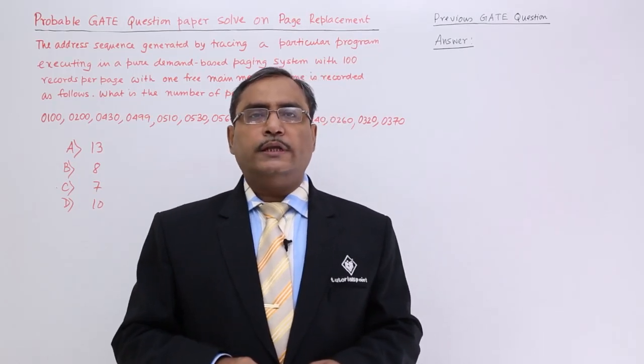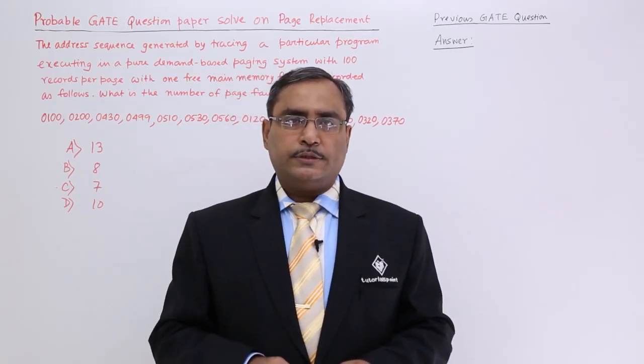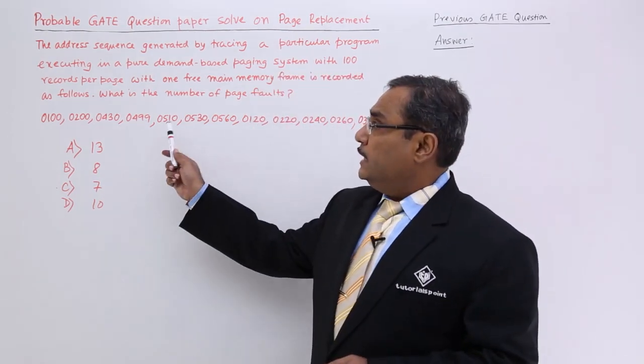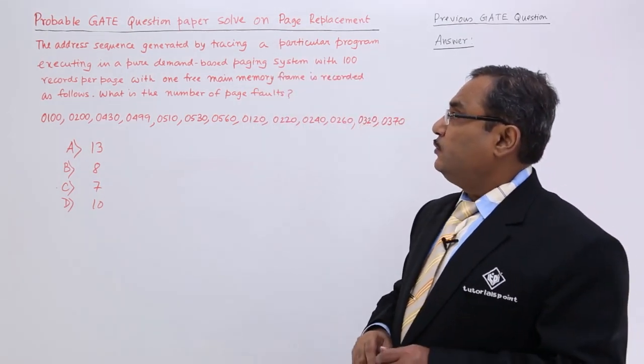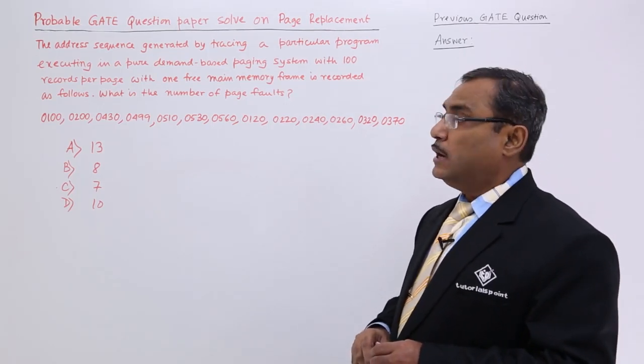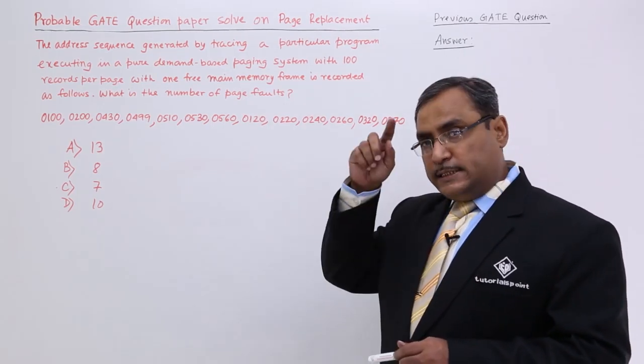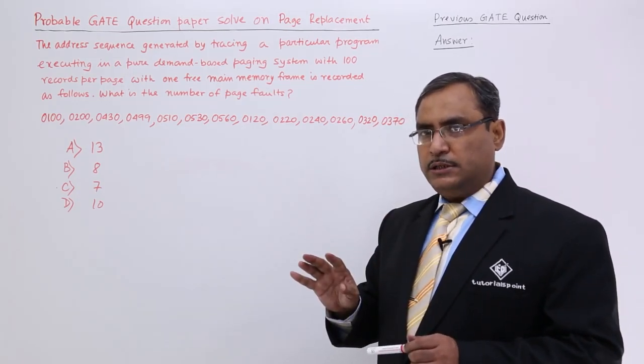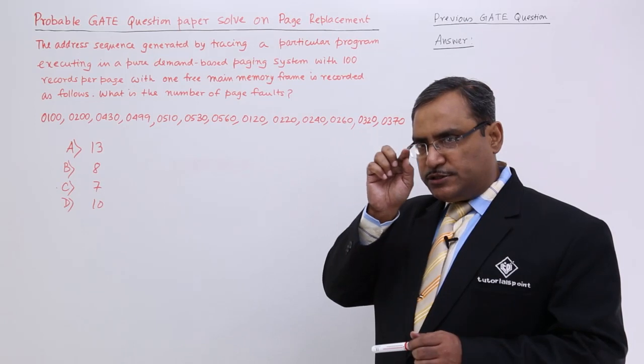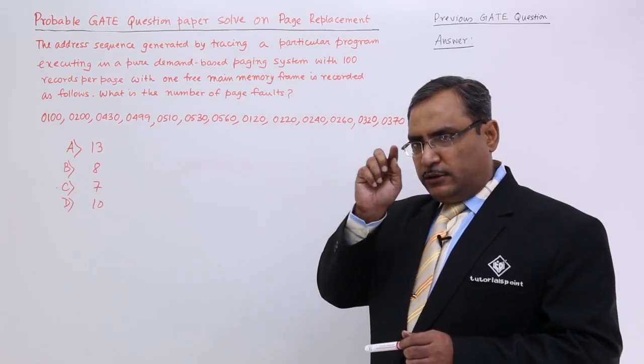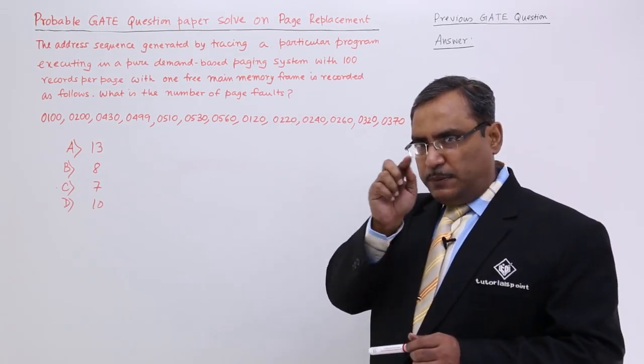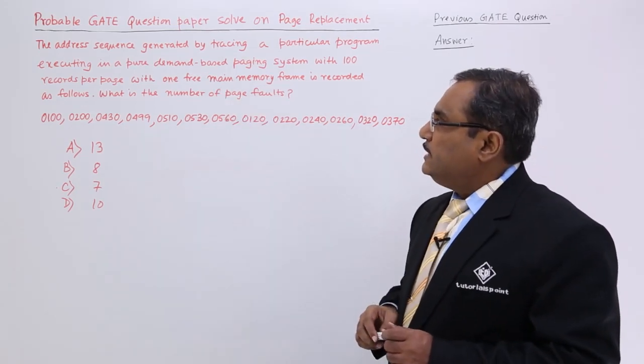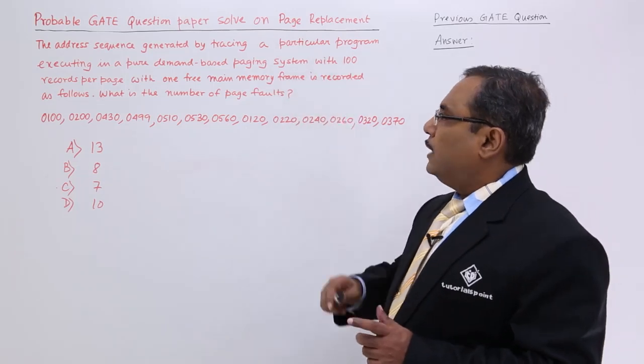Let us solve another GATE question on page replacement algorithms. In this particular problem, it has been given that the address sequence generated by tracing a particular program. That means there is a particular program consisting of multiple instructions. I am checking which instruction is getting executed one after another and their respective addresses.